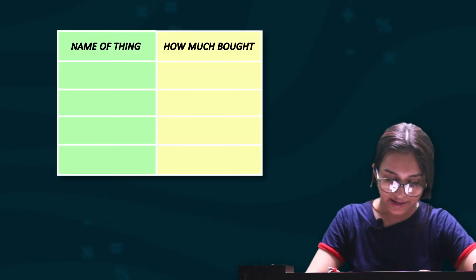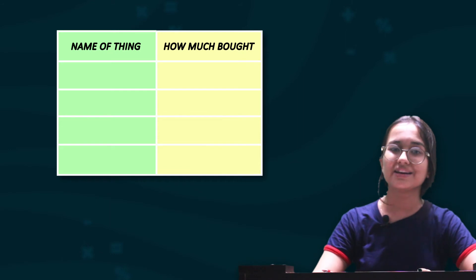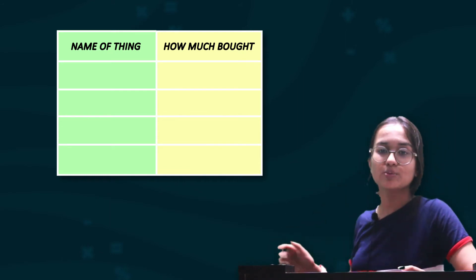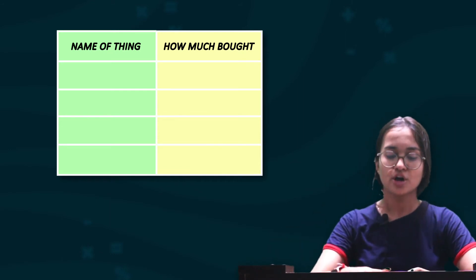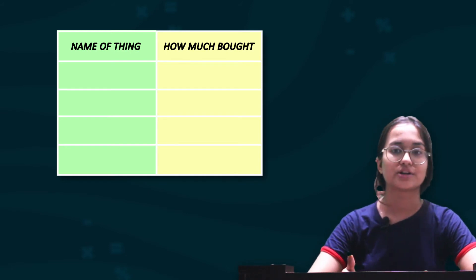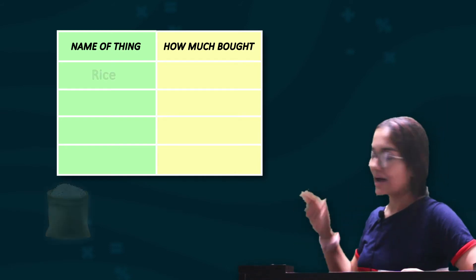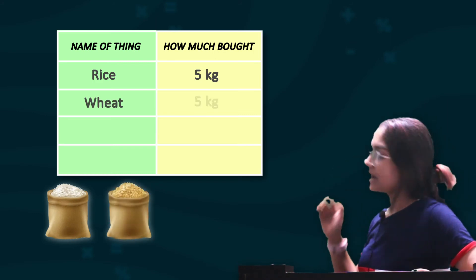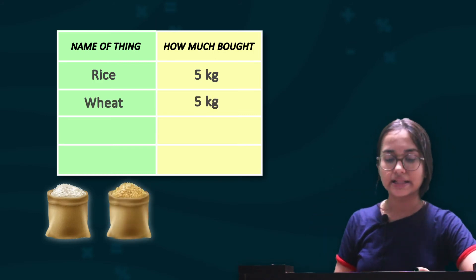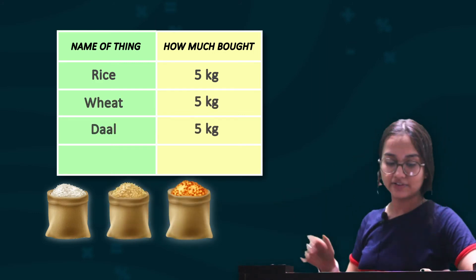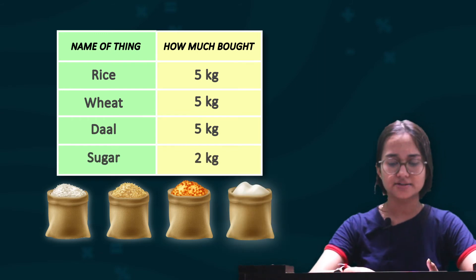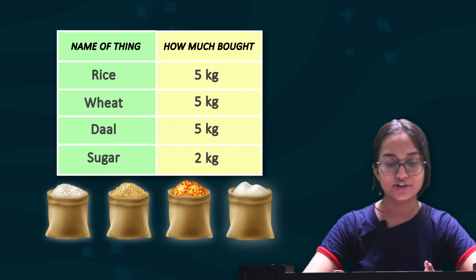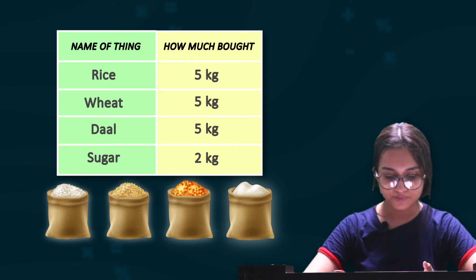After this, you need to make a list of things bought at your home — write the name of the thing and how much was bought. For example, at my home: rice 5 kgs, wheat 5 kgs, dal 5 kgs, and sugar 2 kgs. Complete the table according to the items brought at your home.